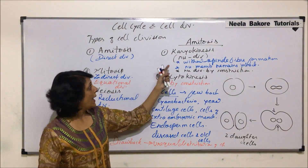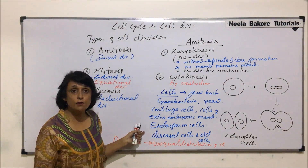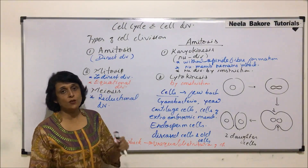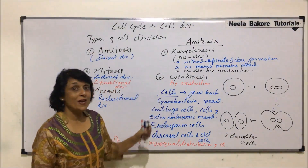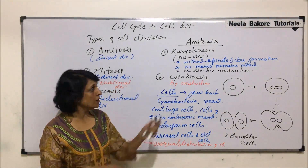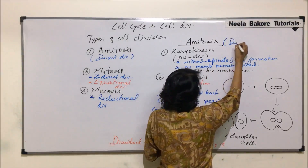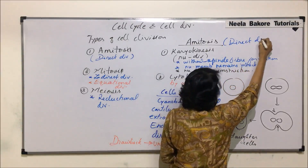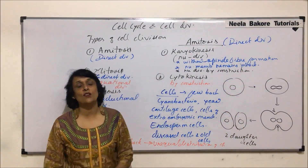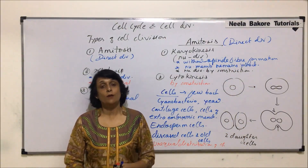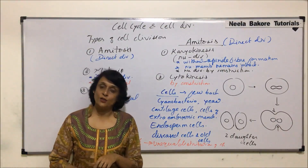So amitosis is found in those cells we listed. It has two steps — karyokinesis and cytokinesis — but because we see that constriction happening, amitosis is also termed as direct division. In the next segment, we will start with the next division, that is mitosis.